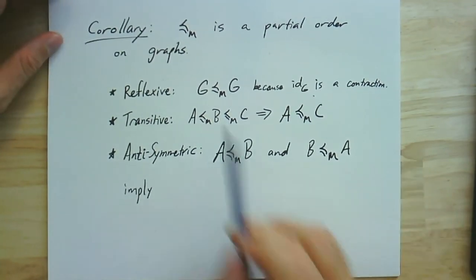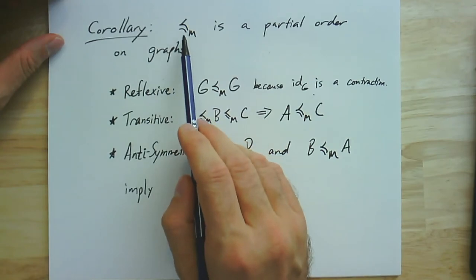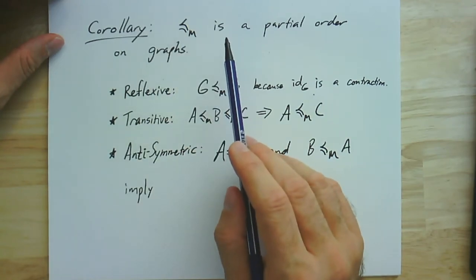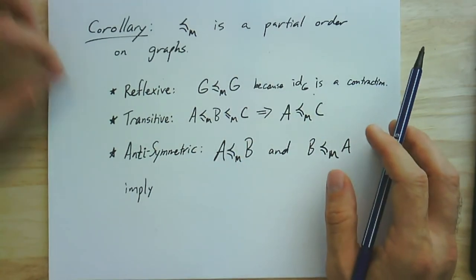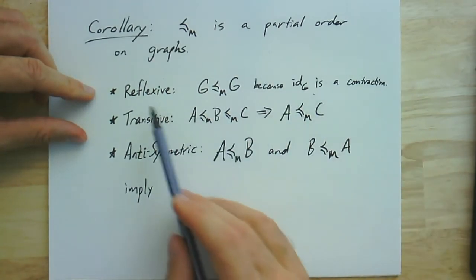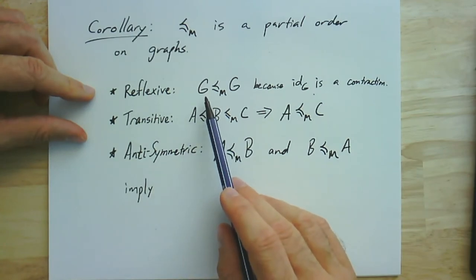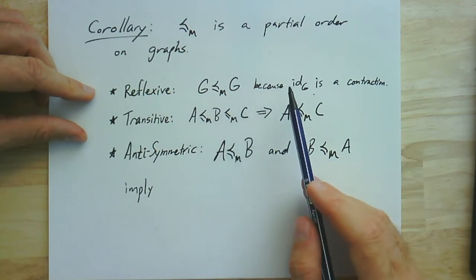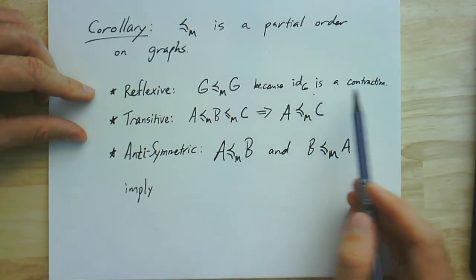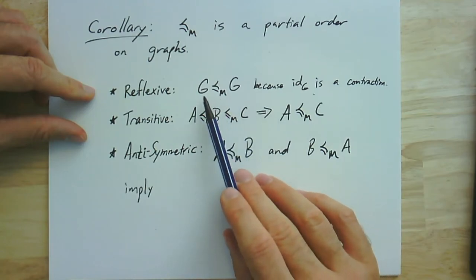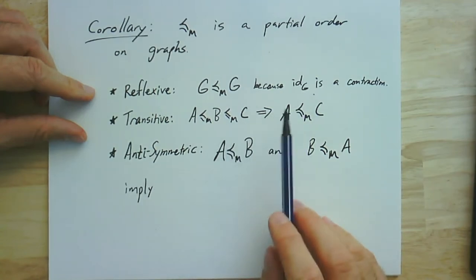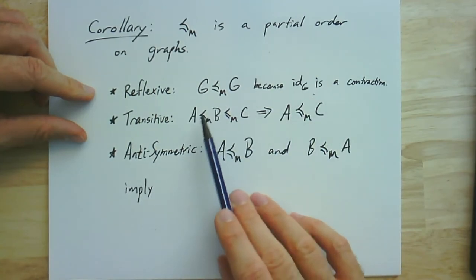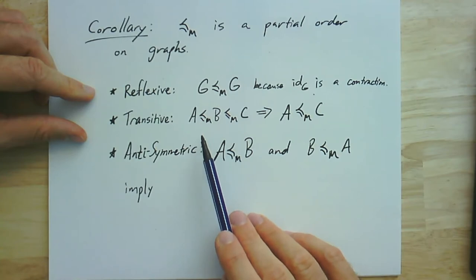And there are three conditions we check for partial orders. First, that's reflexive. And that one's pretty straightforward because a graph is going to be a minor of itself because, well, the identity is itself a contraction. So it's a subgraph of itself, and it contracts to itself by the identity map. So it's a reflexive relation. Every graph is a minor of itself.